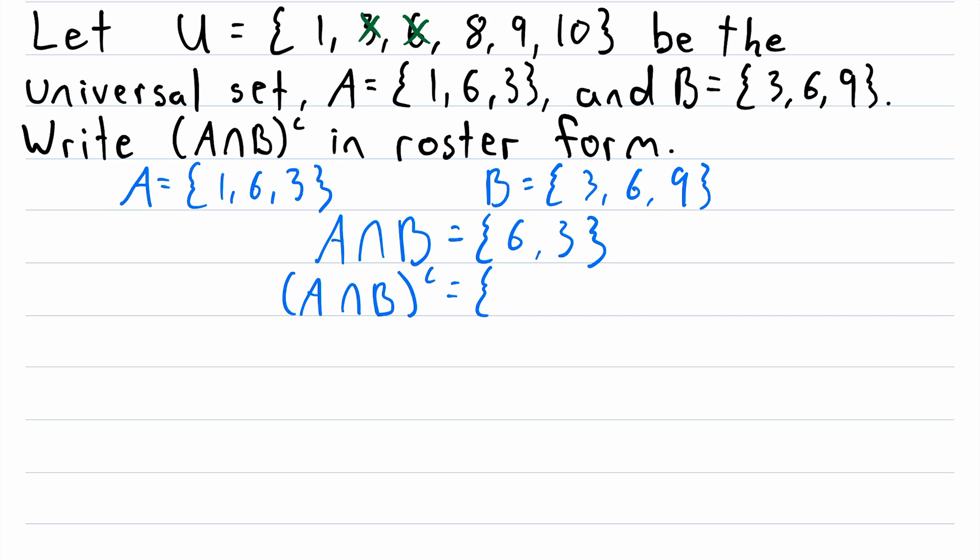The remaining elements are the absolute complement of A intersect B. So let's write that out. The absolute complement of A intersect B is the set containing 1, 8, 9, and 10. Again, these are the elements of the universal set that are not in A intersect B. So there we go, that is our answer. That's the absolute complement of A intersect B in roster form. Alright fantastic, let's move on to our last problem.